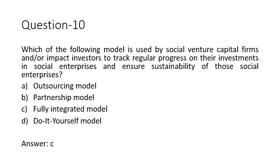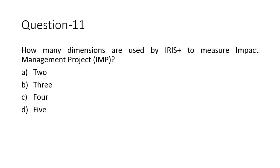Question eleven is straightforward: how many dimensions are used by IRIS to measure the impact management project? IRIS is an accounting-type system. The answer is D — five different dimensions.